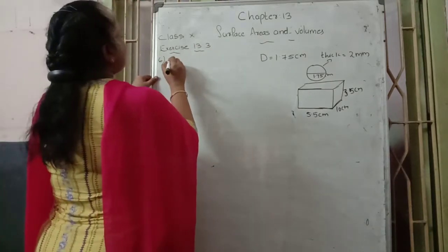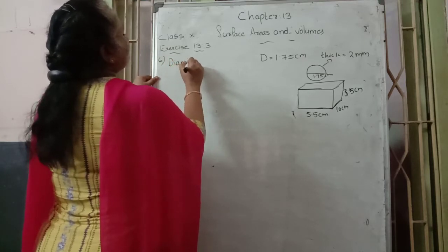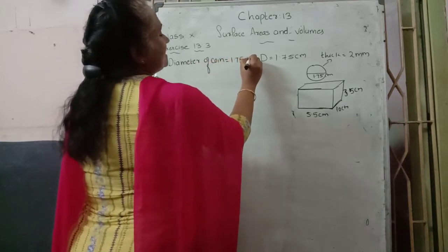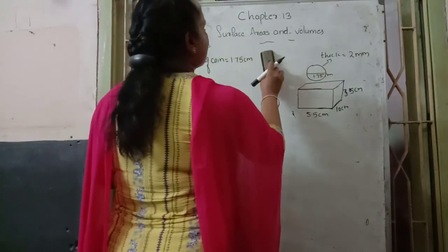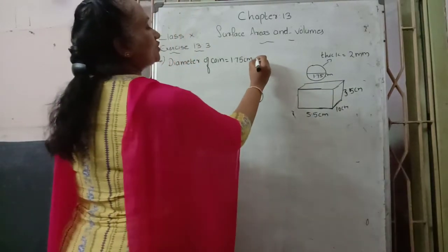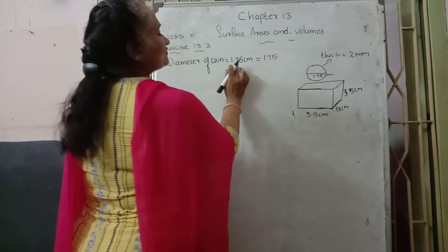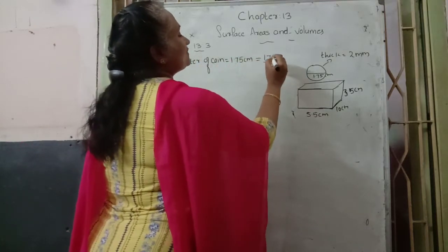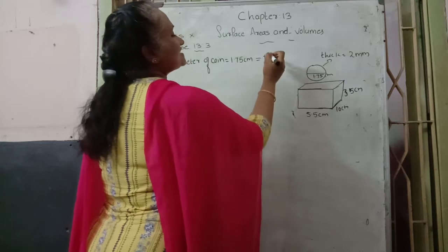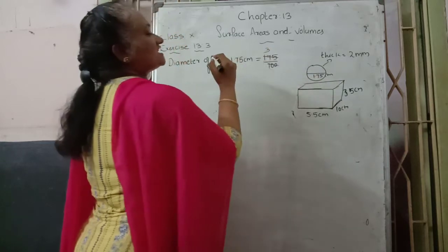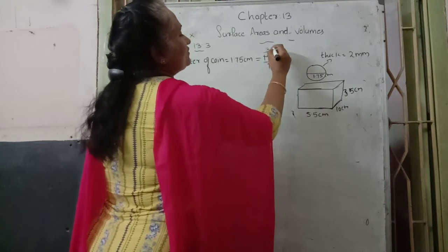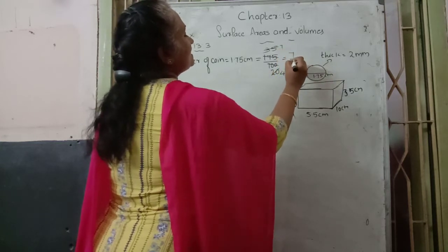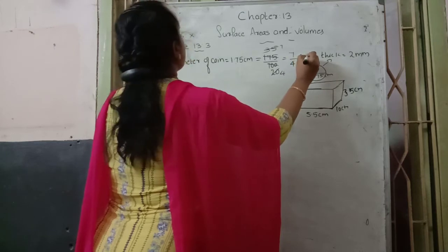First, given information: diameter of coin is equal to 1.75 cm. We want to convert the decimal. Remove the decimal point — after the decimal point, there are 2 digits, so divide by 100. In the 5 times table, 175 divided gives us 7 by 4 cm as the diameter.